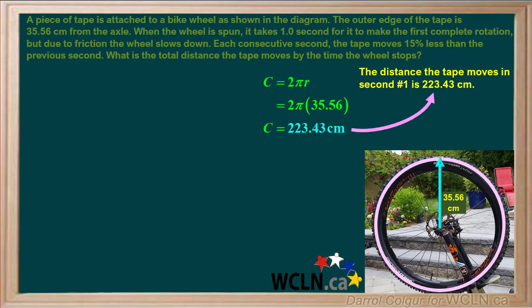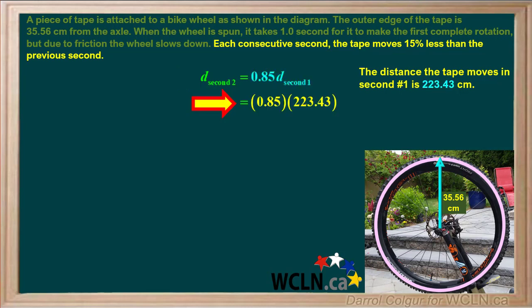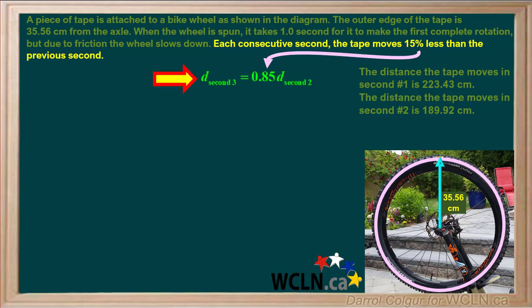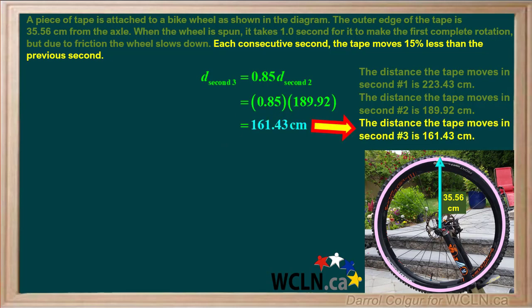So the distance the tape moves in the first second is 223.43 cm. The distance in second number 2 is 15% less, or 0.85 times 223.43, which is 189.92 cm. The distance in second number 3 is 0.85 times 189.92, or 161.43 cm.